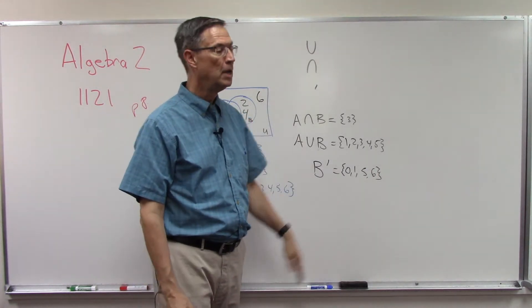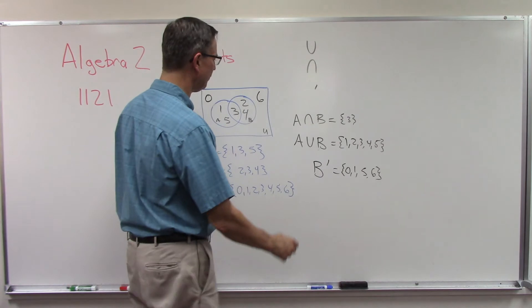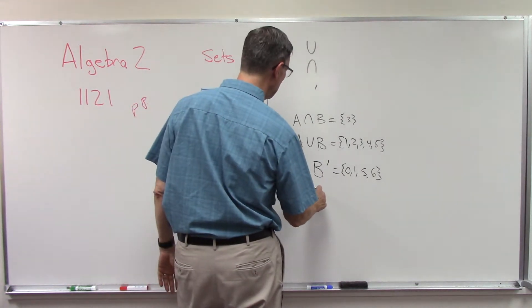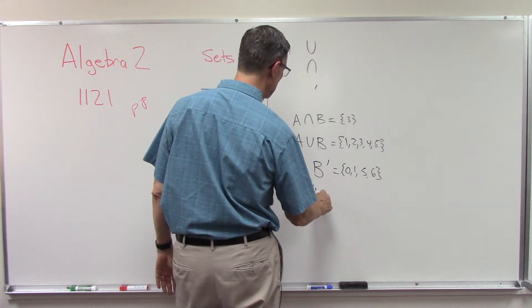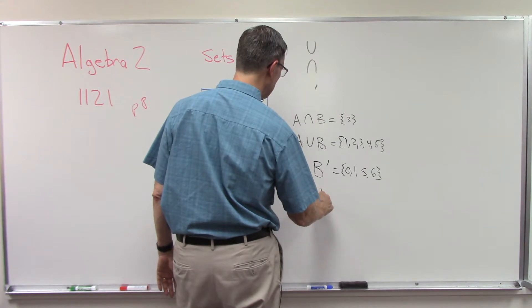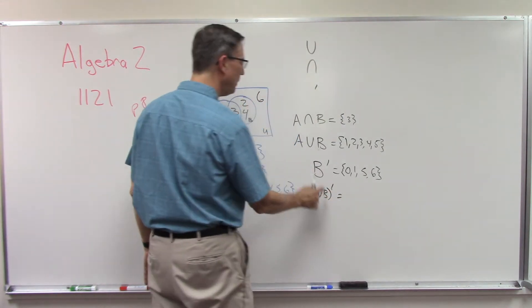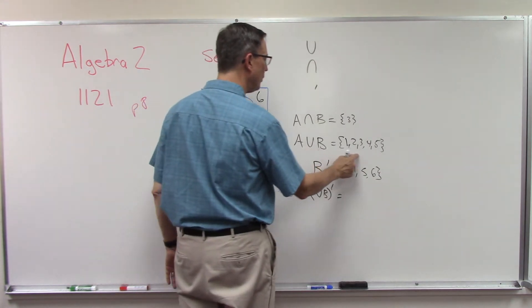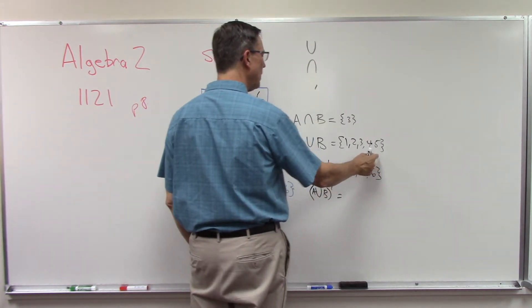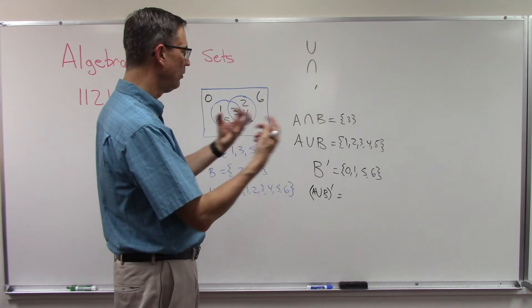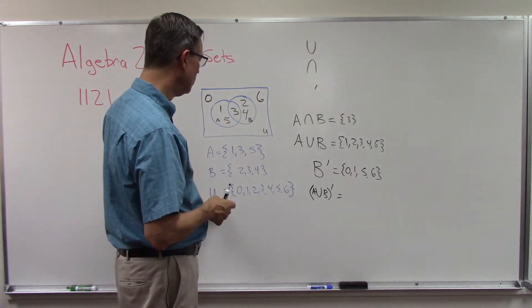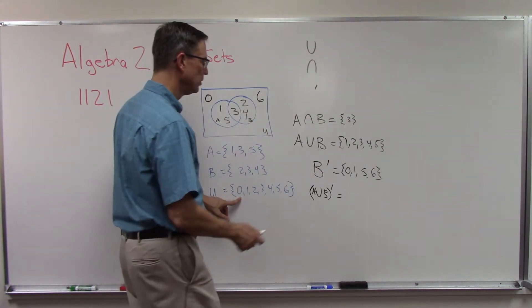Now to make it even more interesting, they might do something like this: A union with B—whoops, we'll get the A B in there—and then the prime of that combination. So now we're looking at this whole thing: zero one two three four five, and if I take all of those out of set U what's left, and so you can see that it's just zero and six.